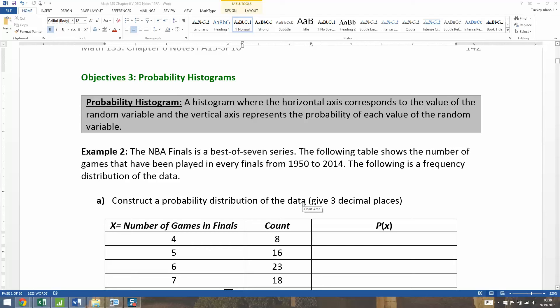Now that we know the difference between discrete and continuous random variables, we're going to focus on discrete random variables for the rest of Chapter 6. We want to be able to analyze them using different tools, and the first tool we're going to use is probability histograms. Don't worry about continuous ones - we will work with continuous random variables in Chapters 7, 8, and beyond.